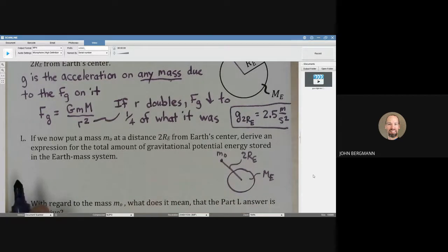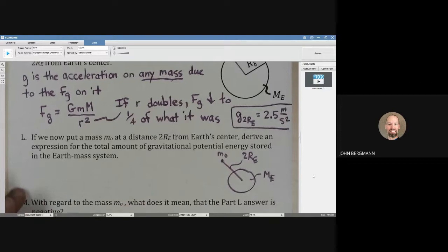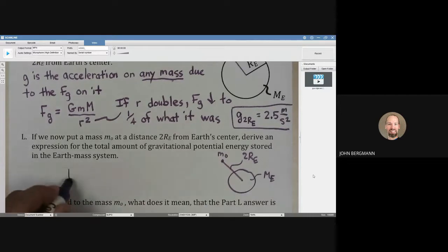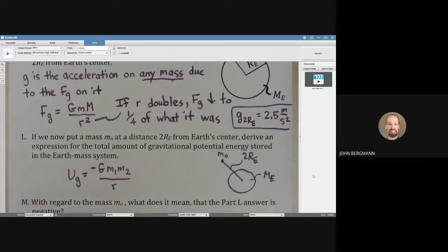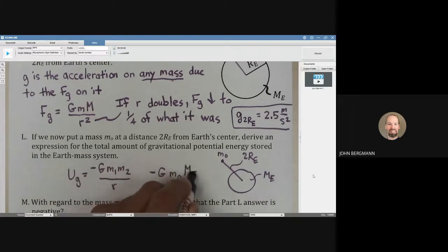The total amount of gravitational potential energy - we want to use the absolute gravitational potential energy equation, which goes like this: negative G, M1, M2, over R - not R squared, just R. For this case, we're going to get negative G times M-naught times ME divided by 2RE.